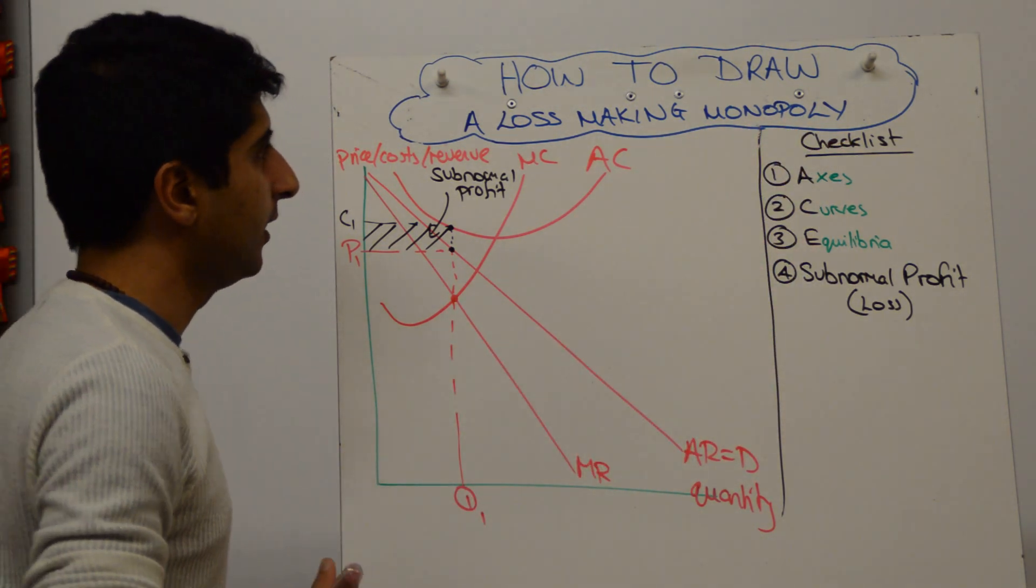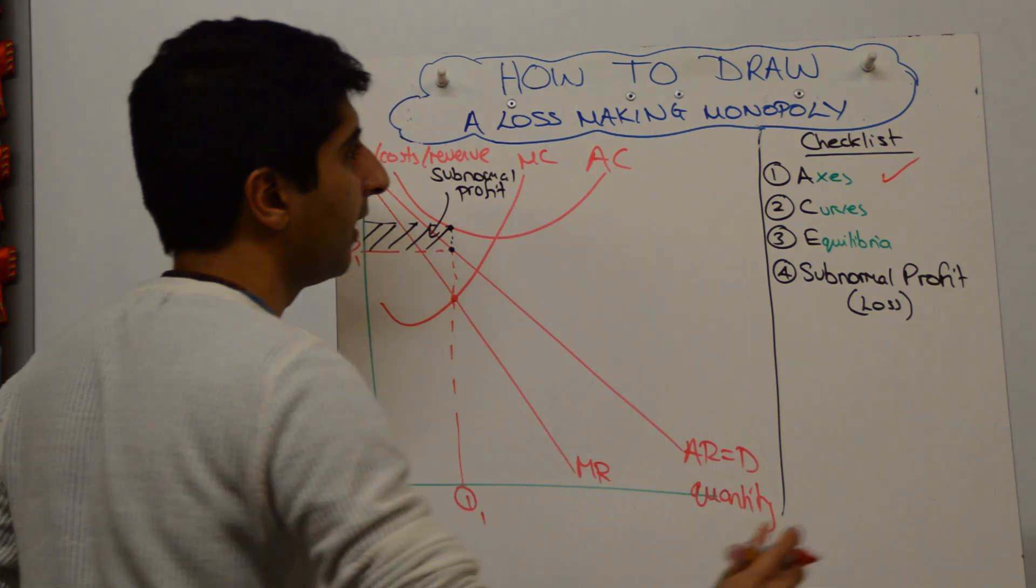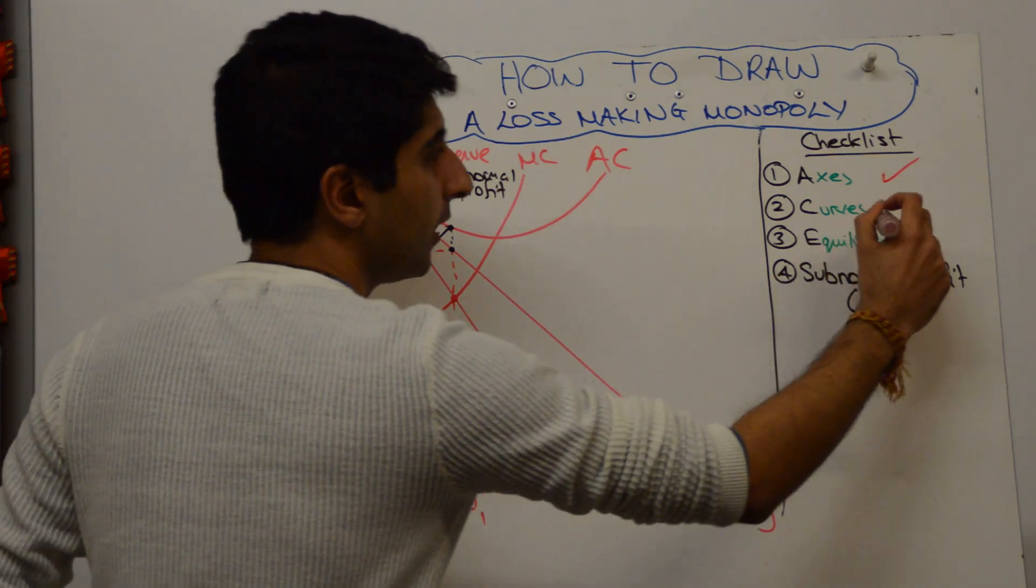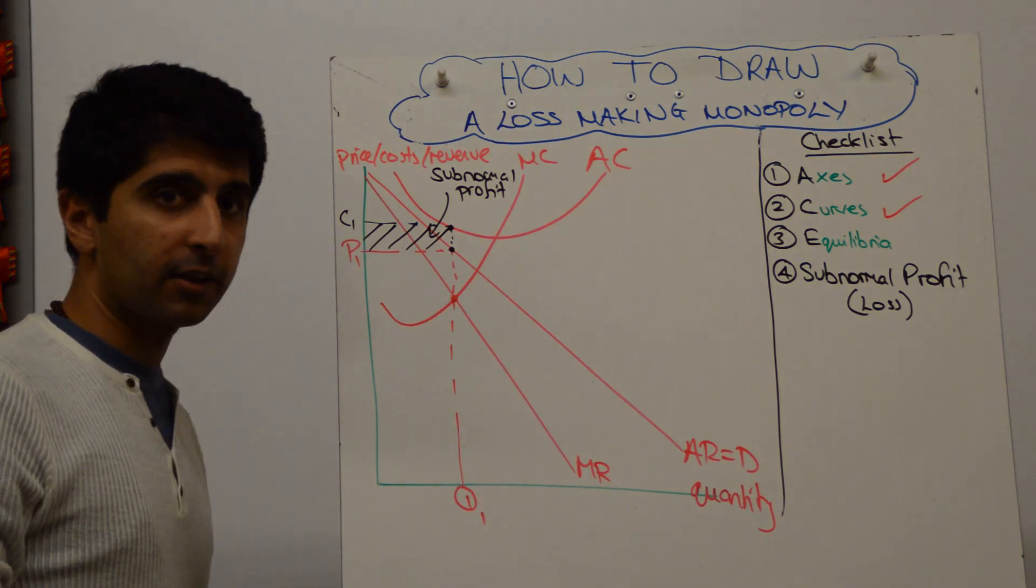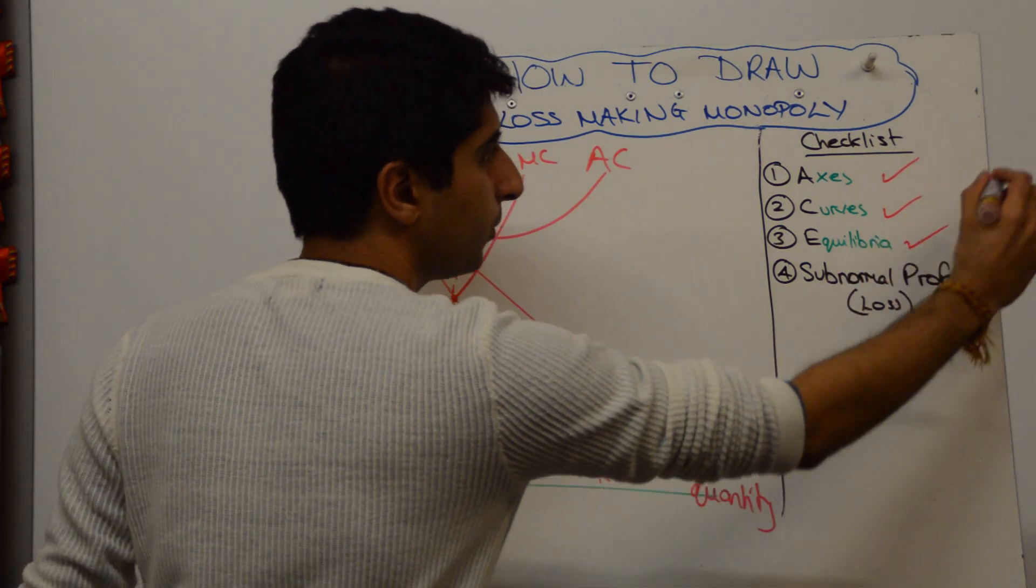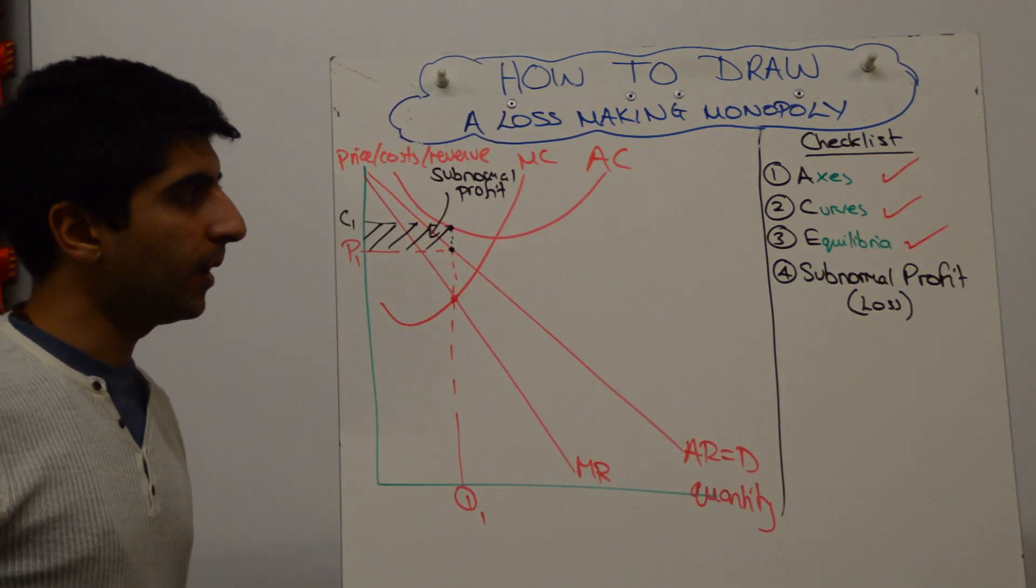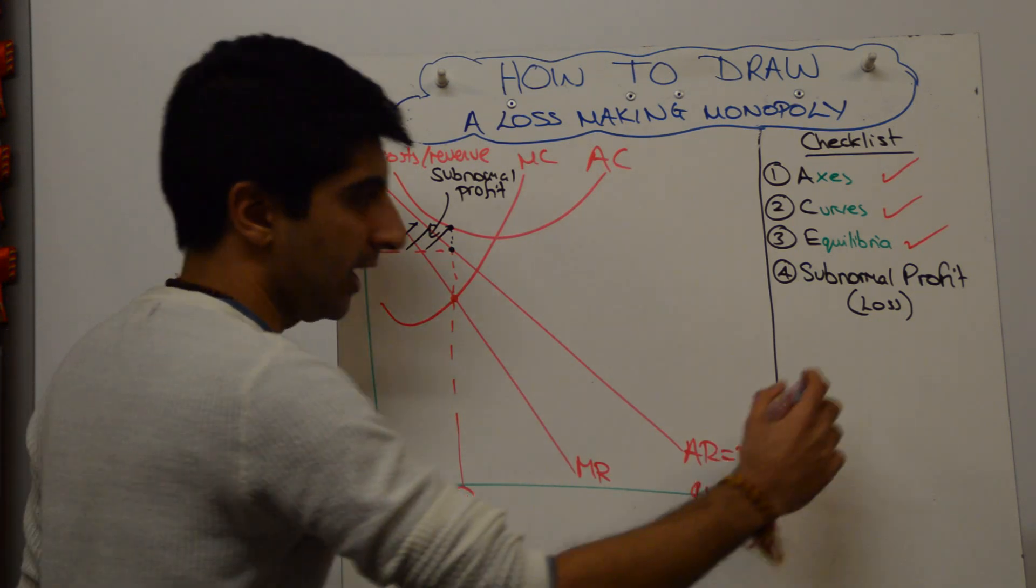Checklist: have we labeled our axes? Yep, we have, properly detailed. Have we labeled all of our curves? Yes, we have. AR is equal to D, that's important. Have we labeled the equilibrium, the profit maximization equilibrium point? Yes, we have. Have we shown our subnormal profit clearly labeled? Yes, we have as well. Job done.